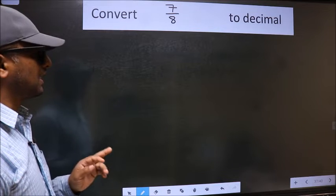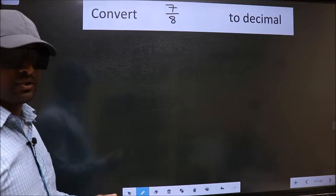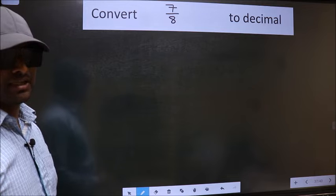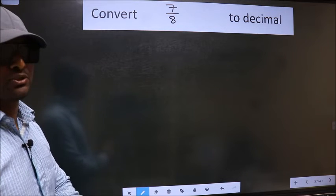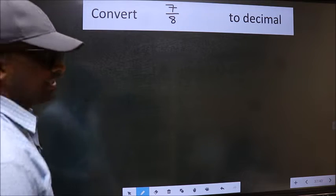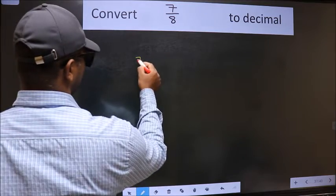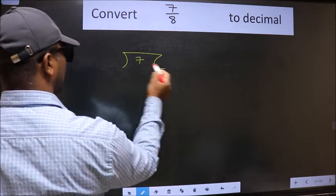Convert 7 by 8 to decimal. To convert, we have to divide. To divide, we should frame it in this way. 7 here, 8 here.